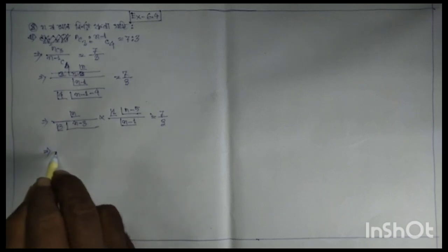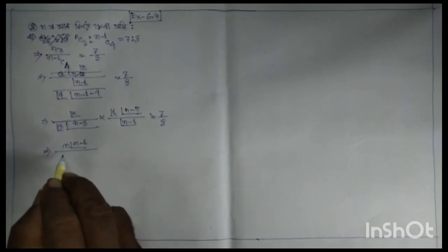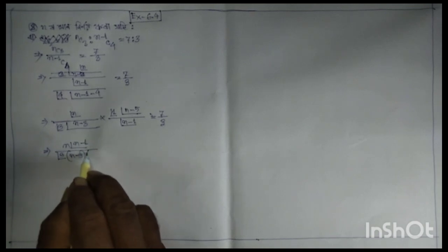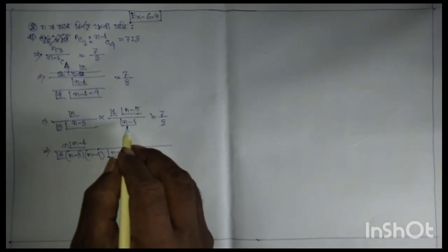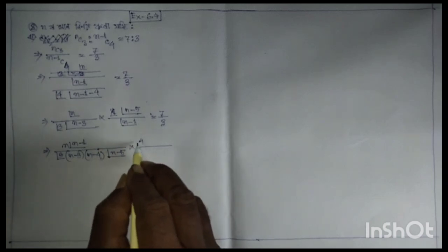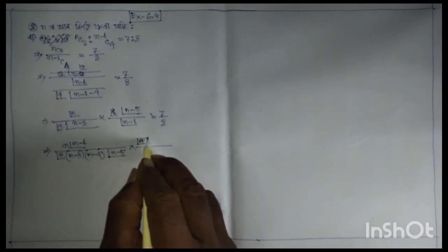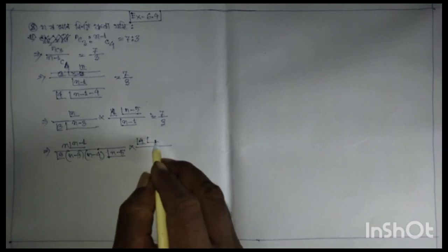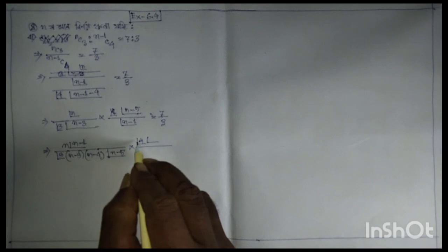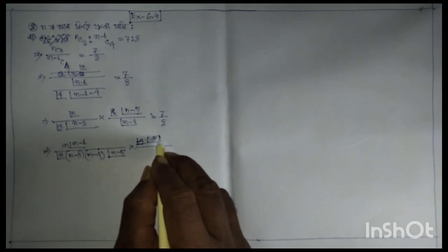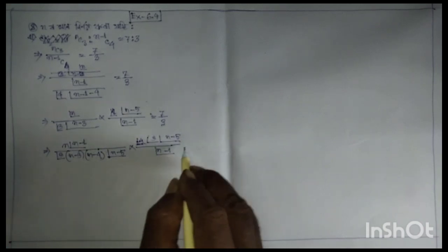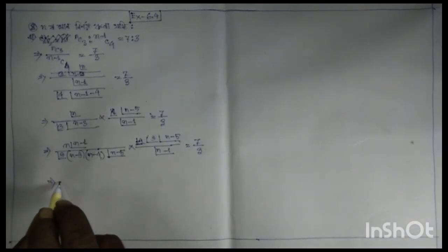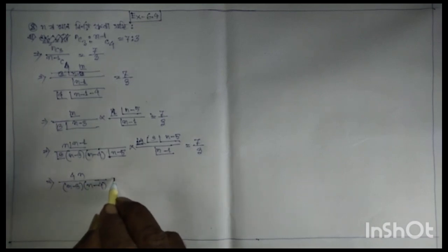Equals 2 by 3, implies n into factorial n minus 1, factorial 3, into n minus 3, n minus 4, factorial n minus 5, into factorial 4. It is factorial 4, factorial n minus 5, by factorial n minus 1, equals 2, 7 by 3. Implies 4n by minus 3, into n minus 4, equal to 7 by 3.